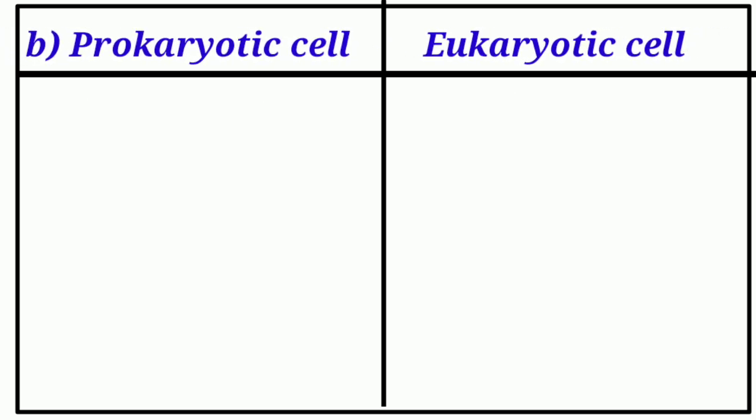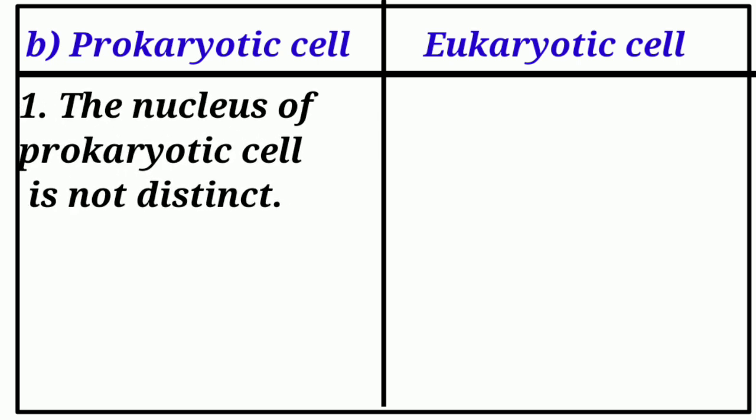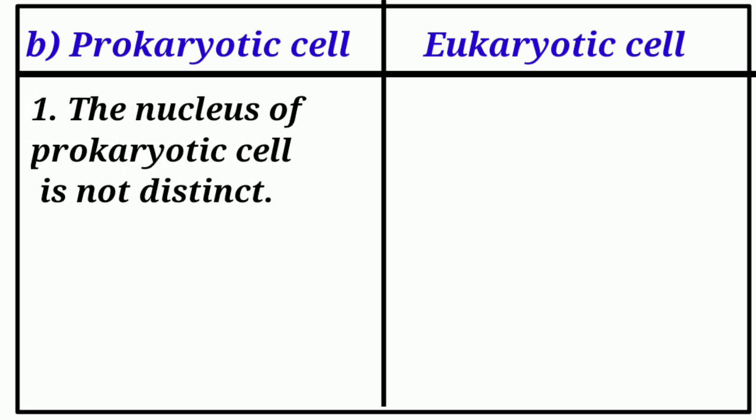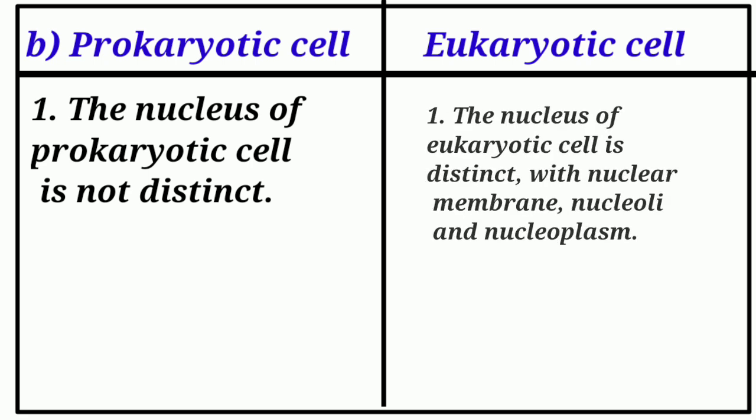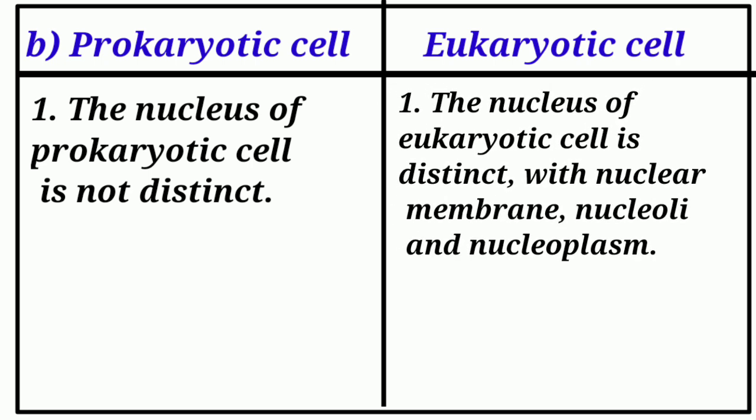B. Prokaryotic cells and Eukaryotic cells. Prokaryotic cells: The nucleus is without nuclear membrane, nucleoli, and nucleoplasma.